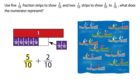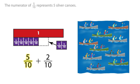In five-tenths, what does the numerator represent? The numerator of five-tenths represents five silver canoes.